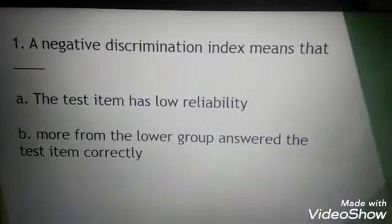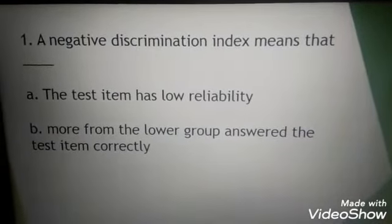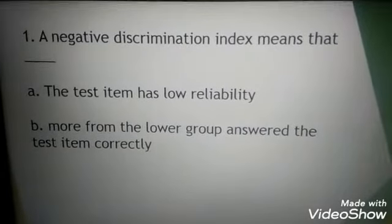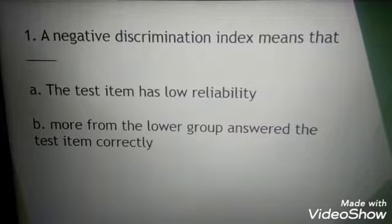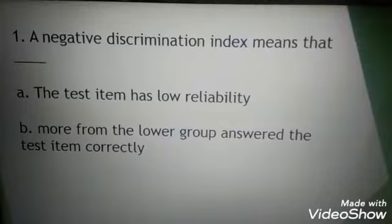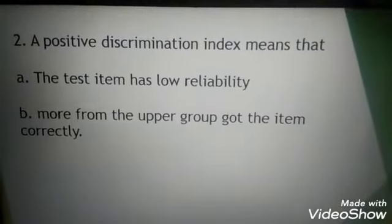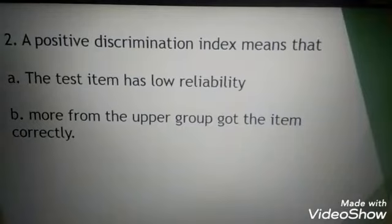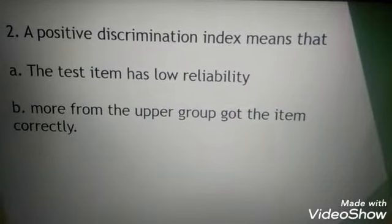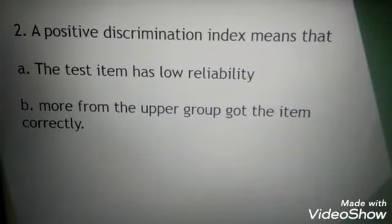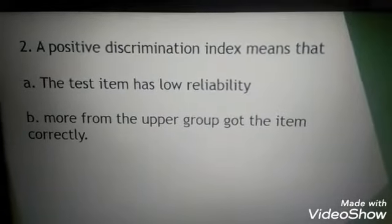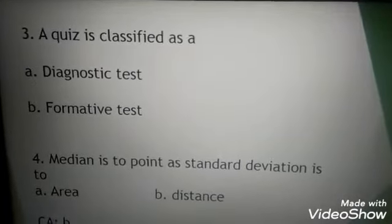My first question: a negative discrimination index means that, is it A, this item has low reliability, or B, more from the lower group answered the test item correctly? The answer is B. Number two: a positive discrimination index means that A, the test item has low reliability, or B, more from the upper group got the item correctly. The answer is B.